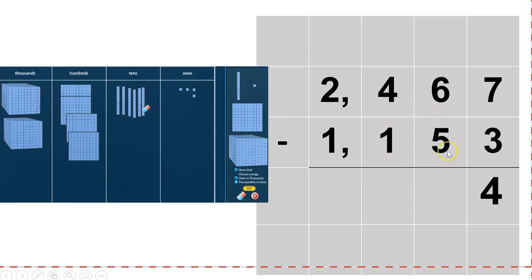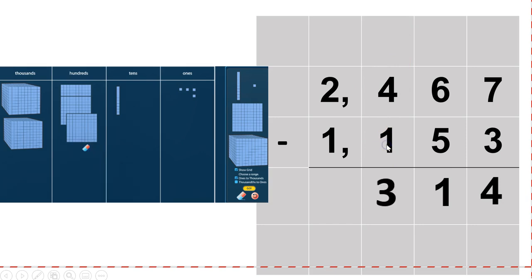I want to go to the tens place and do the same thing. This time I'm going to take away five, leaving me with one ten left. And I'm going to keep moving on, go to my hundreds place, and take away that one — my three hundred. And finally, the thousands place — I take away that one thousand, leaving me with just one. So my answer — in subtraction we call the answer the difference — my difference is one thousand three hundred and fourteen.